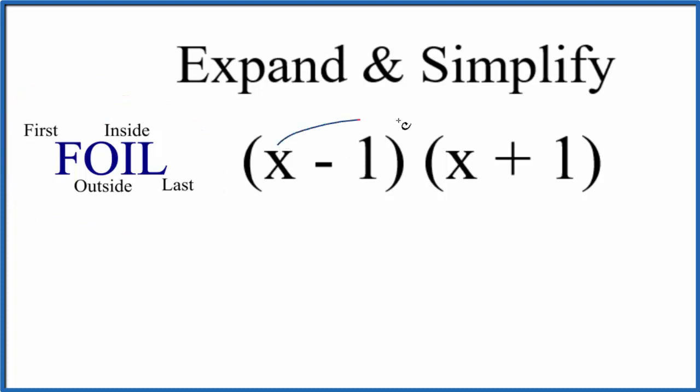Essentially, we're taking the first term, multiplying it by the first term here, so x times x, that's x squared. And then we take the outside terms, this x here over to the one on the outside, x times 1, that's just x.